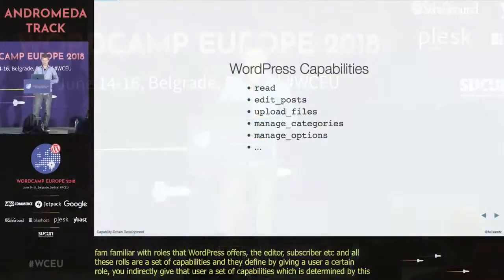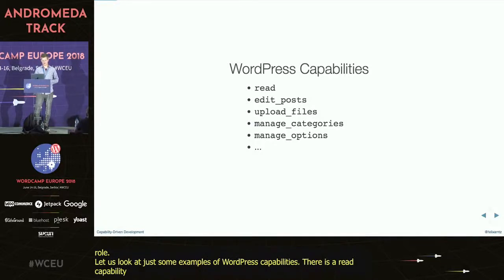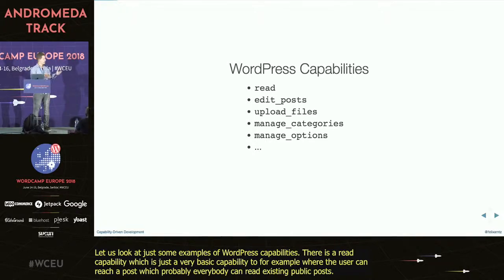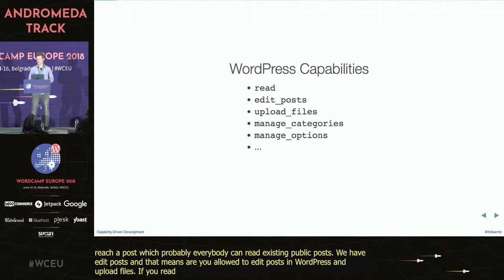Let's look at some examples of WordPress capabilities. There's a read capability, which is a very basic capability to check whether a user can read posts — probably everyone can read public posts. We have edit posts, which means are you allowed to edit posts in WordPress. Upload files. And even with all the other ones, there are tons of them, and they are all pretty self-explanatory.